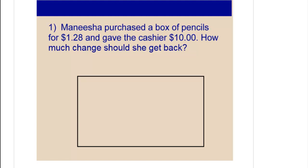So the first thing you want to figure out is what operation is happening. In number one, we read that Manisha purchased a box of pencils for $1.28 and gave the cashier $10. How much change should she get back? What do you think? Get back are some key words, right? Our numbers are 10 and $1.28. So what kind of operation should we use?